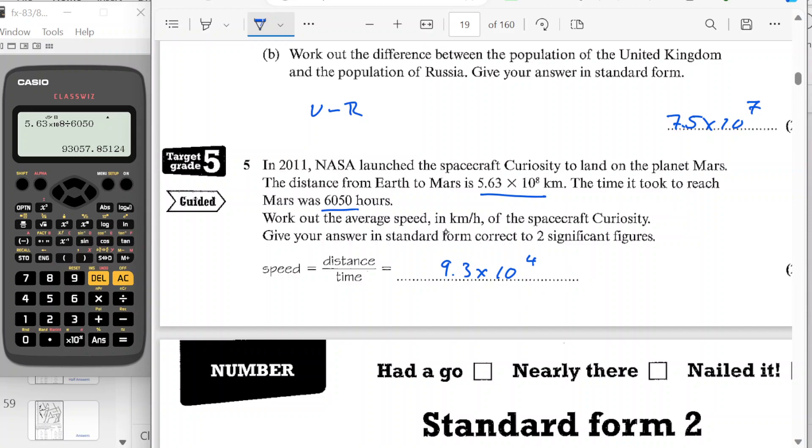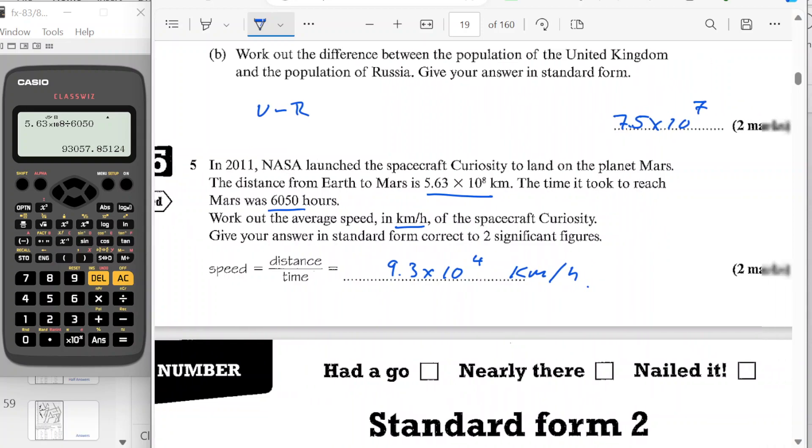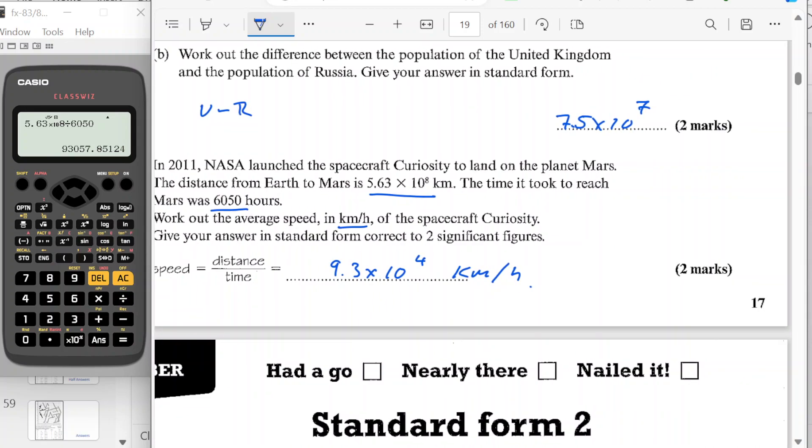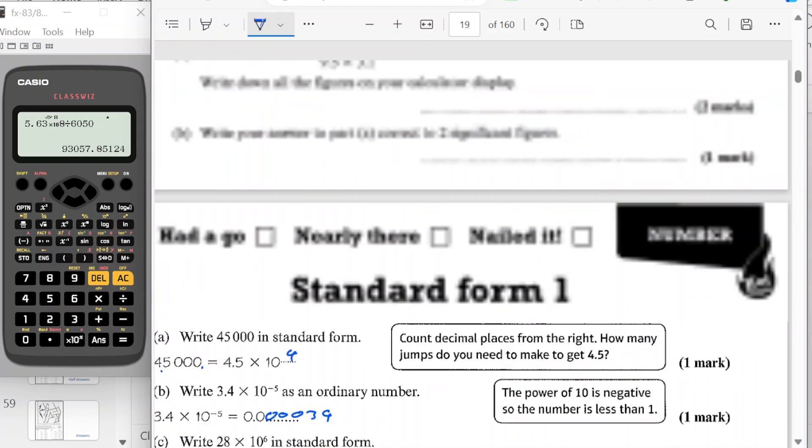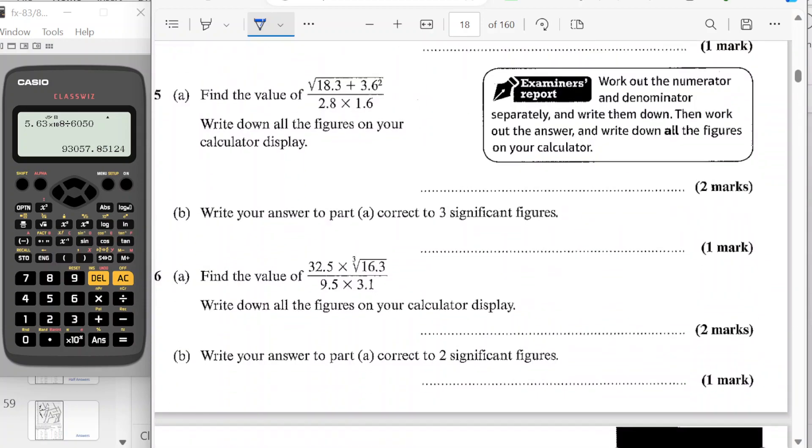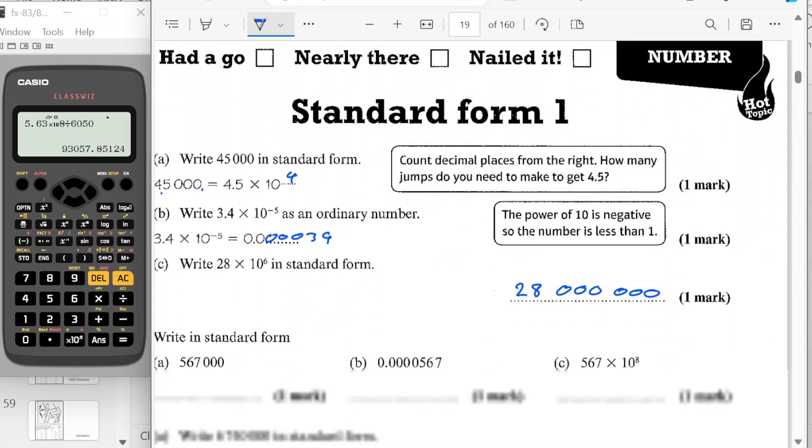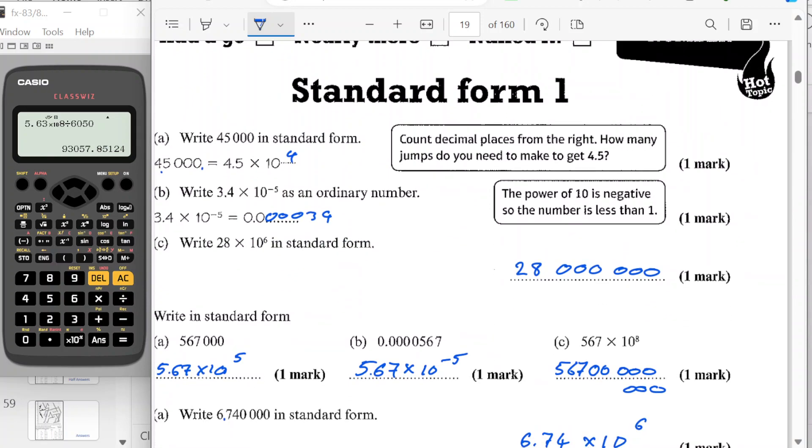And my unit there, we're told it's here anyway, kilometres per hour. And that brings us to the end of that section. That's section 17, standard form from the Edexcel Foundation Tier Workbook. I hope you found it useful. Subscribe if you like.